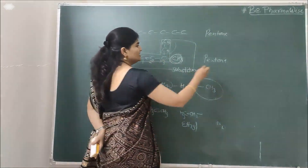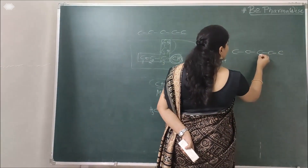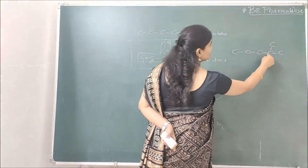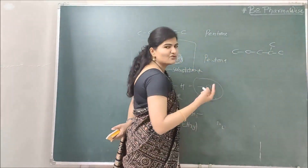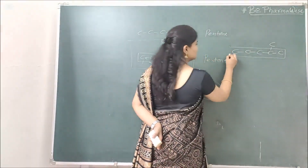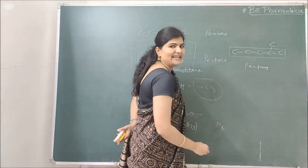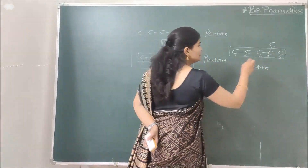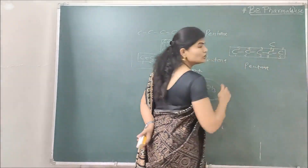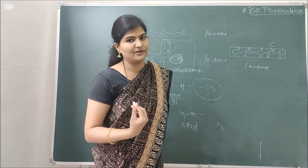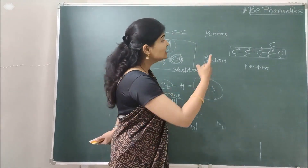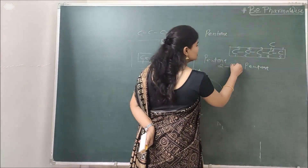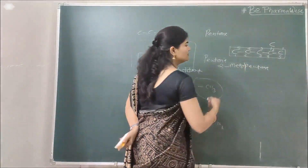But if the substituent is off-center, the numbering direction matters. For instance, if numbering from the left puts a substituent at position 4, while numbering from the right puts it at position 2, you prefer position 2 — the lowest possible number. So in that case, the methyl substituent is at second position, and the name becomes 2-methylpentane.